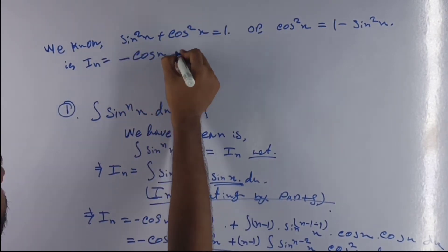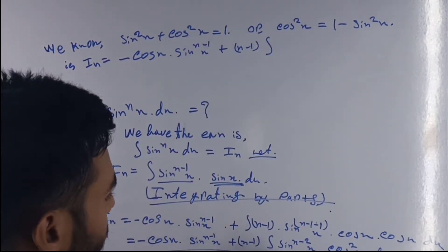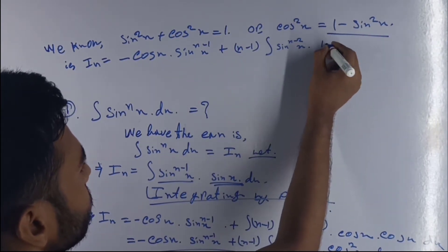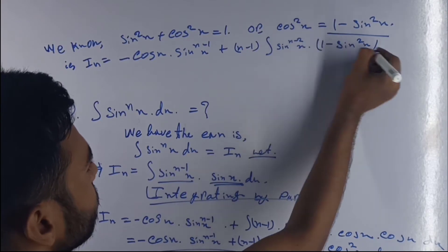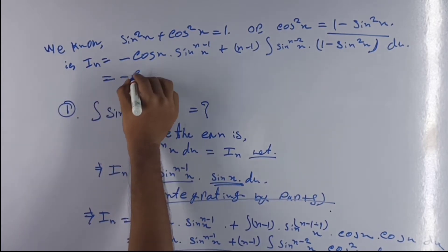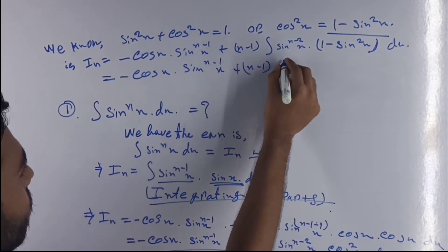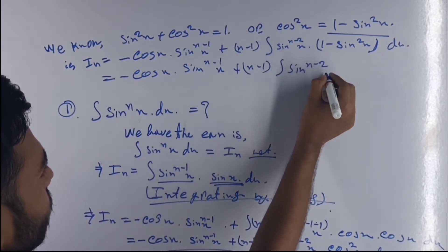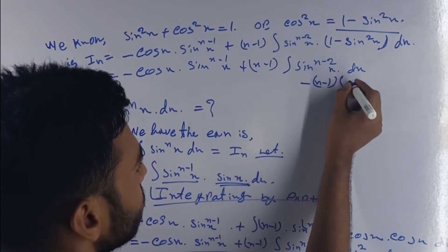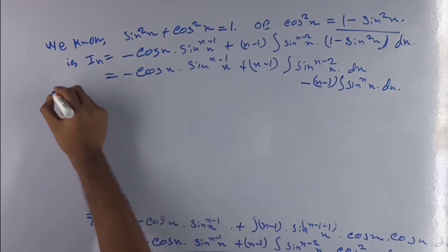So I(n) equals minus cos(x) times sin^(n-1)(x) plus (n-1) times integration of sin^(n-2)(x) dx times (1 − sin²(x)). Expanding, this gives minus cos(x) sin^(n-1)(x) plus (n-1) of I(n-2) minus (n-1) times integration of sin^n(x) dx, where sin^(n-2) × sin² = sin^n.